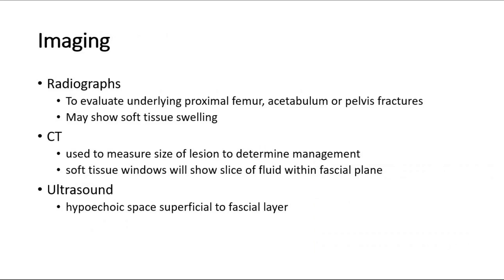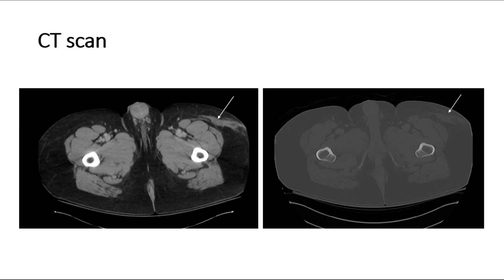For imaging, radiographs should be done to evaluate underlying proximal femur, acetabulum, or pelvis fractures, and may show soft tissue swelling. CT scan is used to measure the size of the lesion to determine management, and soft tissue windows will show a slice of fluid within the fascial plane. Ultrasound will show a hypoechoic space superficial to the fascial layer. These are some pictures of CT scan showing the lesions pointed by the arrows.